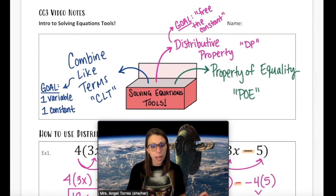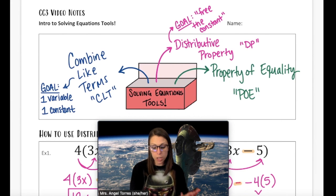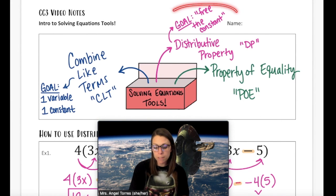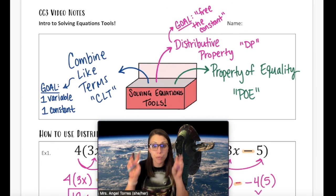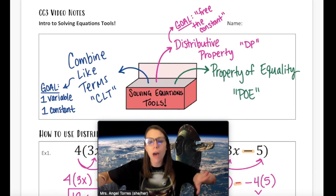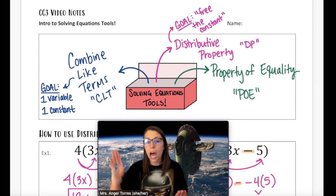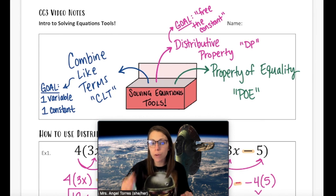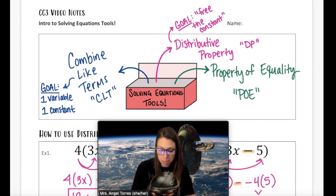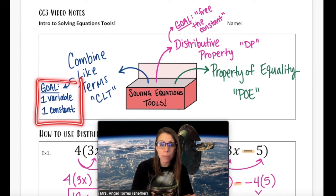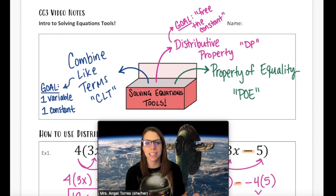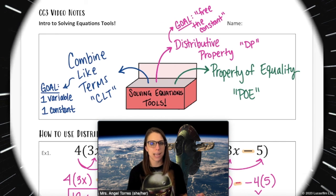To quickly recap: when using these tools, the goal of Distributive Property is to free the constant — get it out of that group and make it its own term. The goal of Combining Like Terms is to combine so we have one variable term and one constant. That's it for today's lesson — I will see you next time.